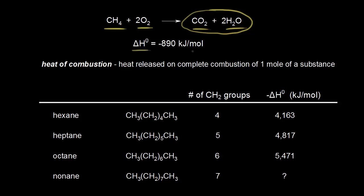Delta H zero for this reaction is negative 890 kilojoules per one mole of methane. If you combust one mole of methane, you're gonna get 890 kilojoules of heat. So this is an exothermic reaction — heat is given off. The heat of combustion is the heat that's released on the complete combustion of one mole of a substance, in this case methane.